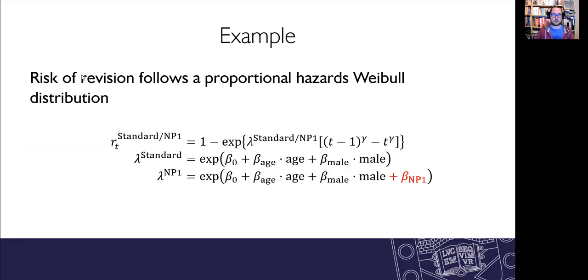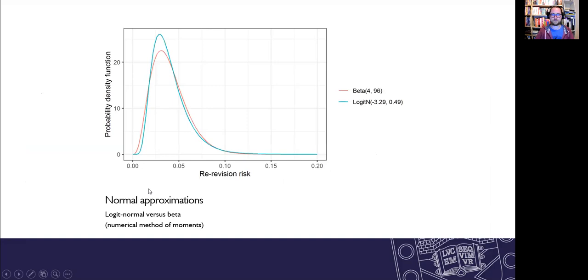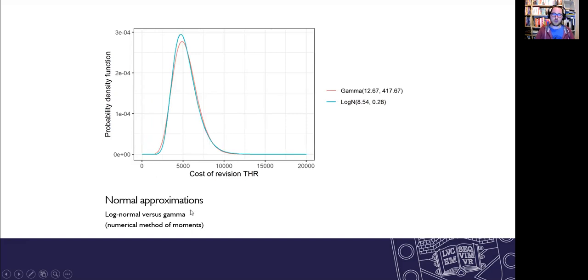So that's just so you can see the formula for the risk of revision. These normal approximations are fairly good so that's the original beta distribution is in red whereas the logit normal approximation is in blue or sort of bluey green. For the cost parameter where we have the gamma and the log normal that's quite a good fit there as well.